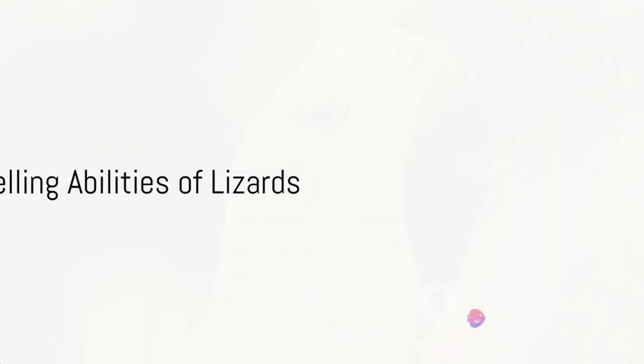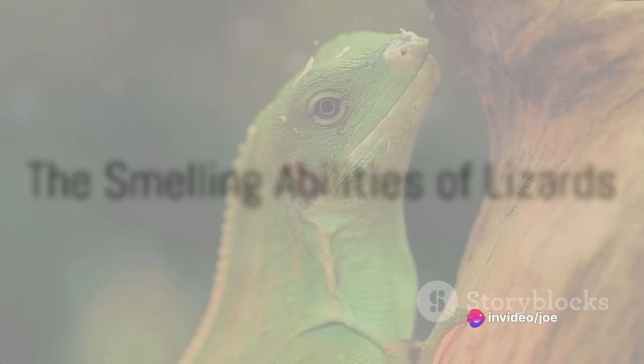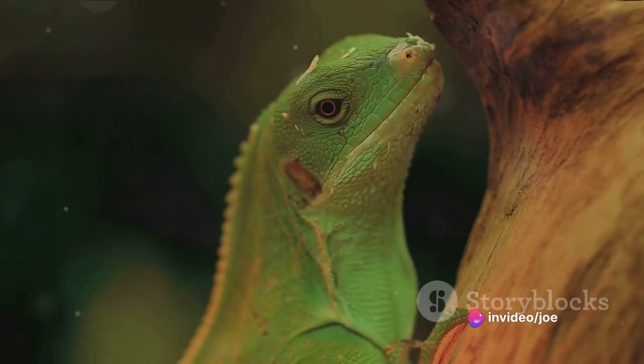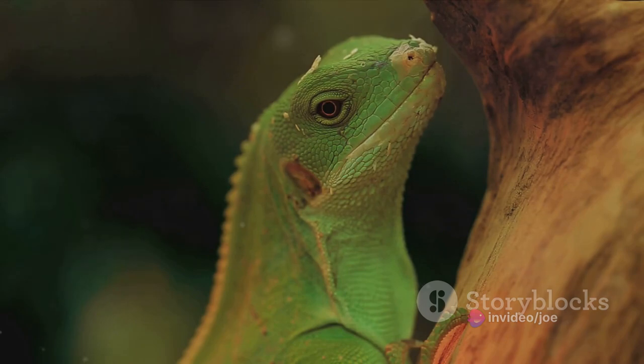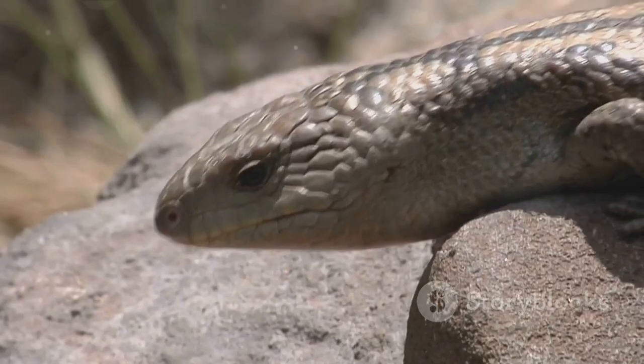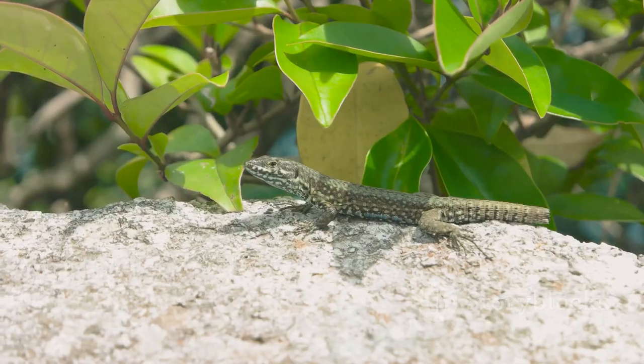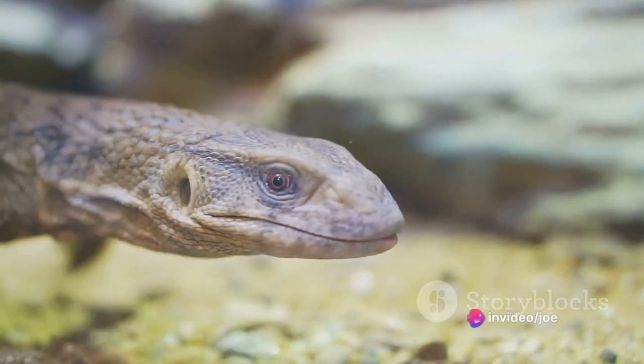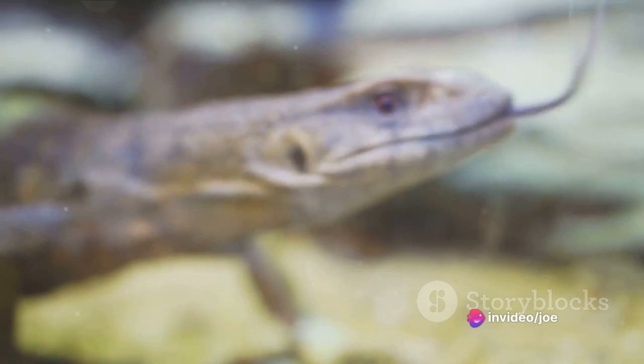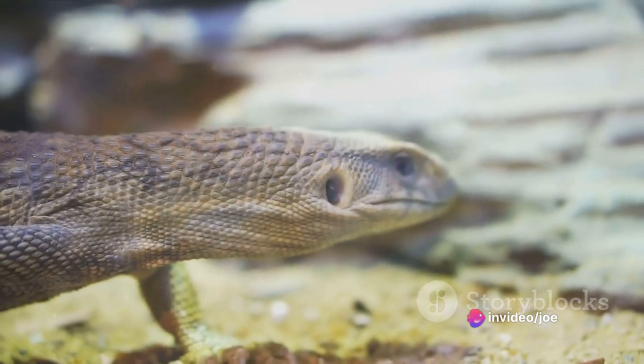Lizards have a rather unconventional way of smelling their environment. Instead of relying solely on their nasal passages like us humans, they employ their tongues for this task. You've probably seen a lizard sticking out its tongue periodically. This isn't just for show or to look intimidating. Each time a lizard flicks its tongue, it's gathering microscopic particles from the air.